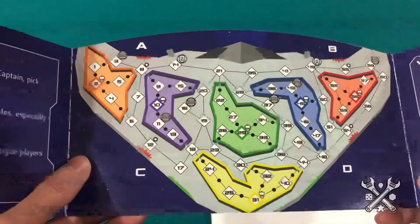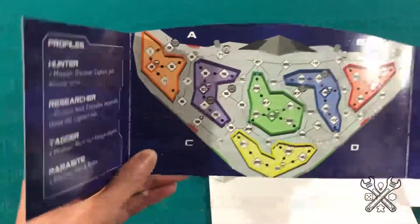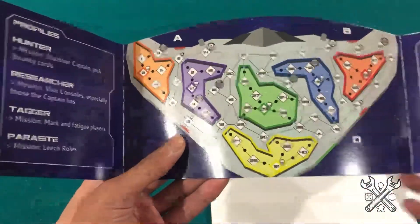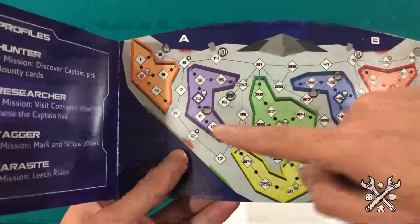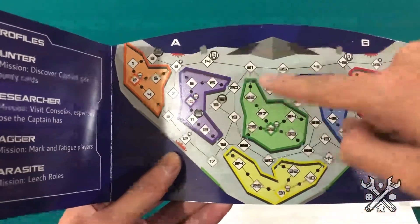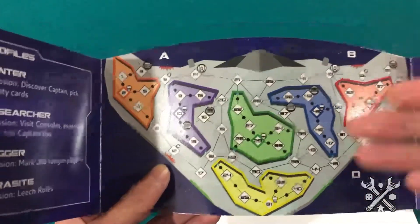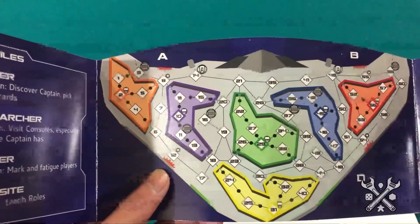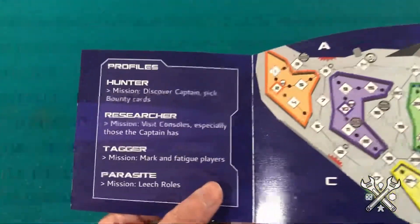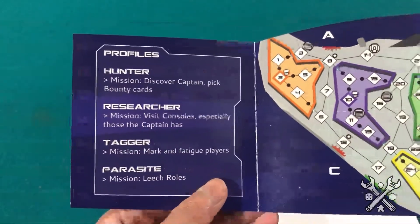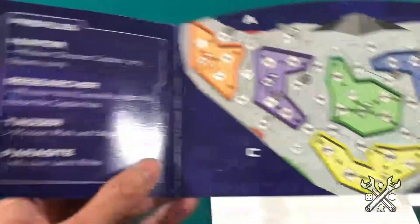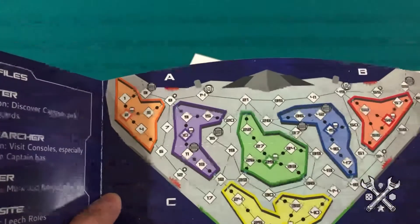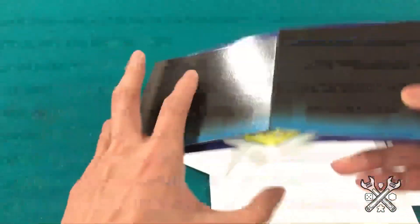So with the hidden movement player having this screen, they have their own little notepad that they can write on. And they are using this reference to make note or jot down where they'll be moving around on the board so that other players can't track the hidden movement player's eyes as they're looking to the main board.